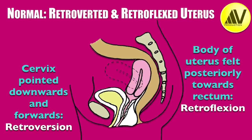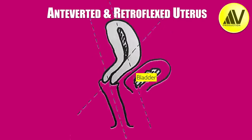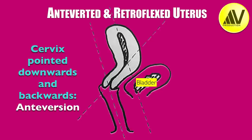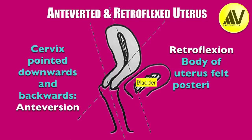In the past, this was considered an abnormal position and many different surgical operations were described to correct this retroverted position. In modern gynecology and obstetrics, a retroverted uterus and cervix are considered a normal variant of the position of the uterus. Contrary to the former belief, retroversion does not cause infertility. This diagram shows that the cervix is pointed downwards and backwards — therefore it is antiverted — but the body of the uterus is towards the rectum, that is, it is a retroflexed uterus.